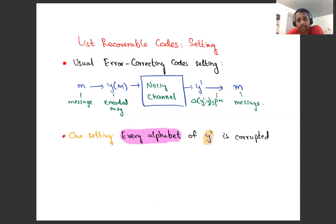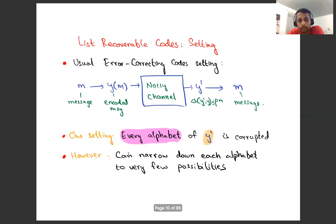One key difference in this setting is that every coordinate of Y' is corrupted — every symbol of Y' is slightly corrupted. You can narrow down every coordinate to some possibilities, but you don't know exactly what they are. However, you can narrow down every coordinate to very few possibilities, and that's one advantage you have.